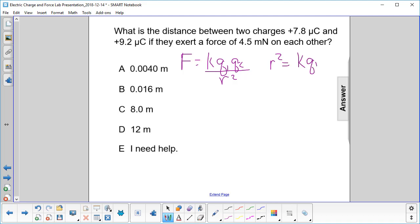k q1 q2 over f, and then you take the square root of that to find r. So r is equal to the square root of k q1 q2 over f. And I just extend that square root sign.